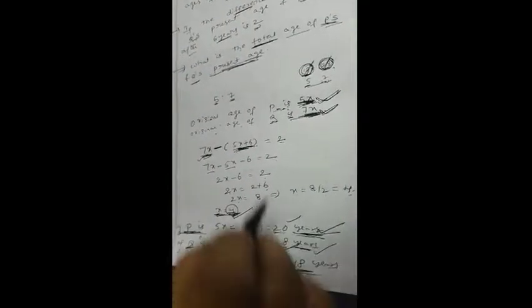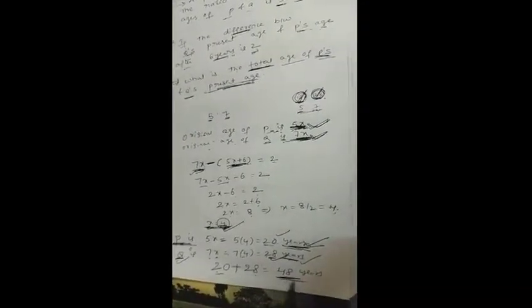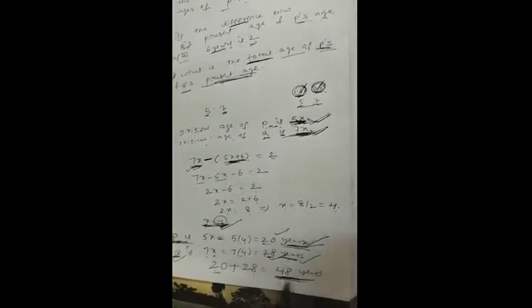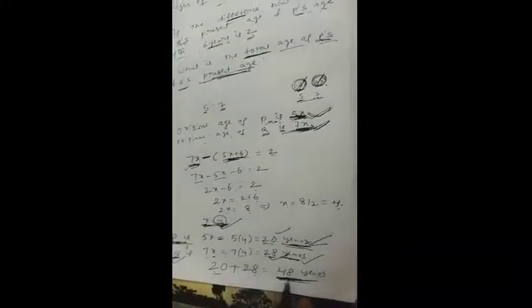So now what we want in the question is the total age of P's and Q's present age. So add 20 and 28. So we will get 20 plus 28 that equals 48 years. And 48 years is the total age of P and Q. So this is the answer. 48 years is the answer. Thank you.